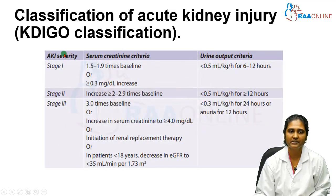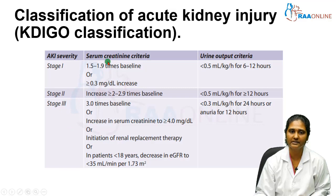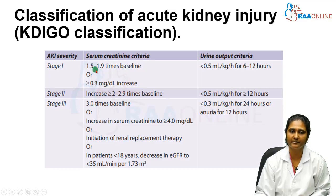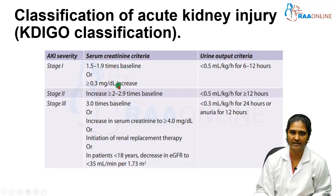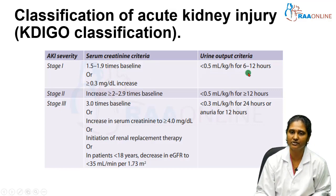Based on severity, AKI is staged as Stage 1, Stage 2, and Stage 3, using two parameters: serum creatinine and urine output. In Stage 1, serum creatinine increases by more than or equal to 0.3 mg/dL, or rises to 1.5 to 1.9 times the baseline, and urine output is less than 0.5 mL per kg per hour for 6 to 12 hours.